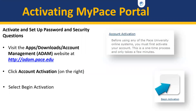Your Pace University username can be found on your student dashboard under the MyInfo tab. As a reminder, the student dashboard is where you logged on to see your admission decision. There are tabs at the top, and if you go to the MyInfo tab you are able to see your university ID as well as your username.